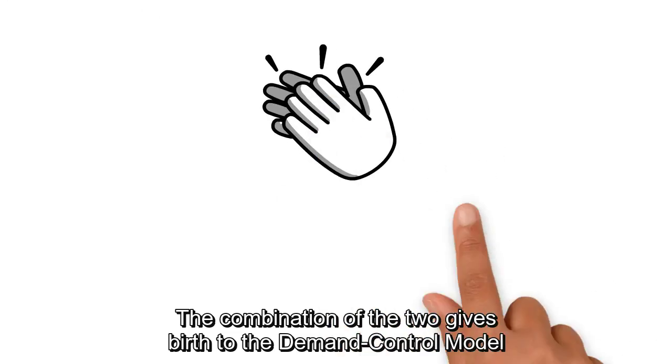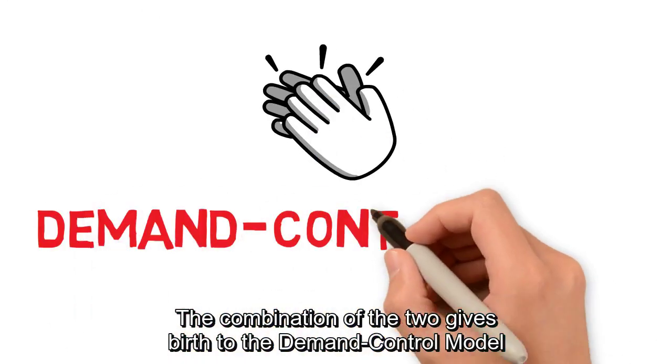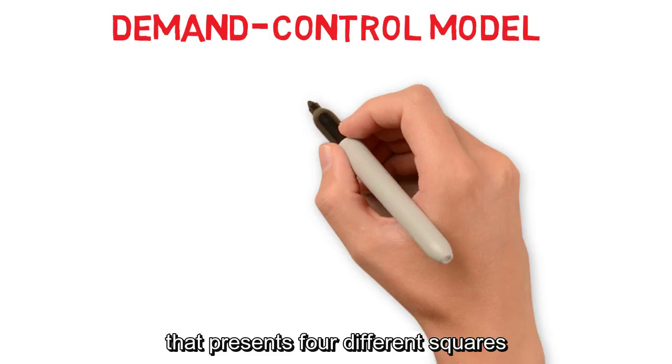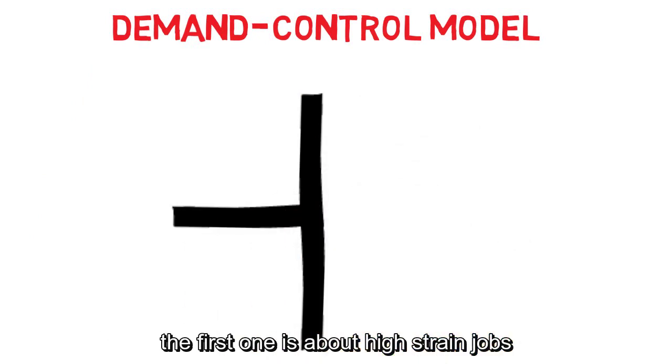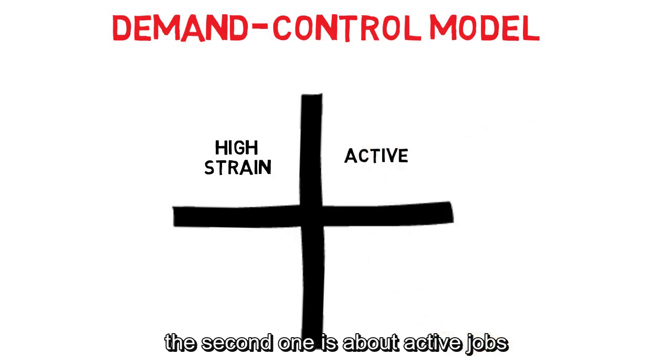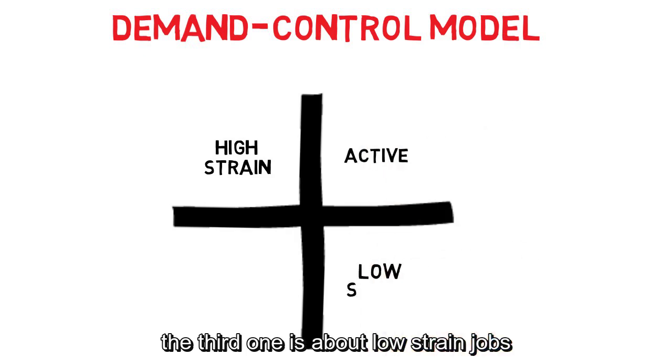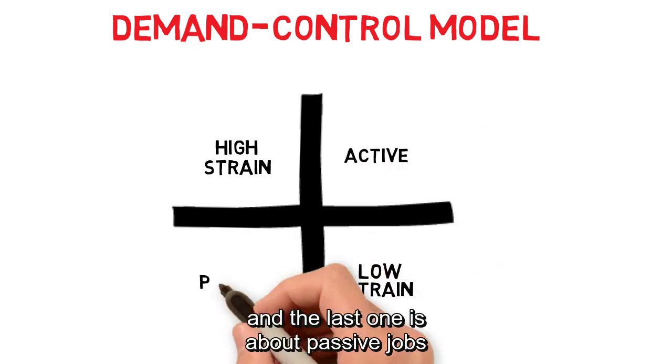The combination of the two gives birth to the demand-control model that presents four different squares. The first one is about high-strain jobs, the second one is about active jobs, the third one is about low-strain jobs, and the last one is about passive jobs.